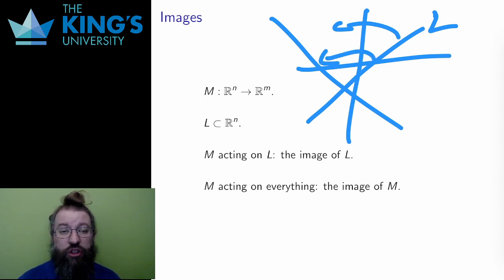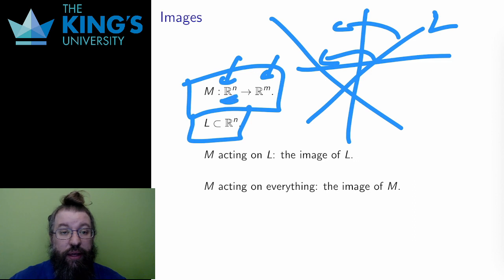In general, say I have a transformation M, represented by a matrix, that goes from Rn to Rm. Say I have an affine or linear subspace L in the domain Rn. What does M do to L? Well, since the transformation is linear, it will send L to some other linear or affine subspace. Some other line, plane, three-space, or whatever.